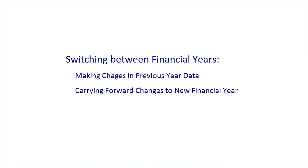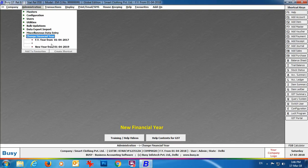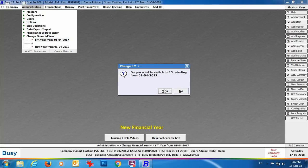Now we'll discuss switching between financial years — making changes in previous year data and carrying forward changes to the new financial year. In the month of April, many times a need arises to switch back to the previous financial year, make certain changes, carry forward those changes, and again start working in the new financial year. To switch back to the previous financial year, go to Administration → Change Financial Year, select the financial year from 1st April 2017, and click OK.